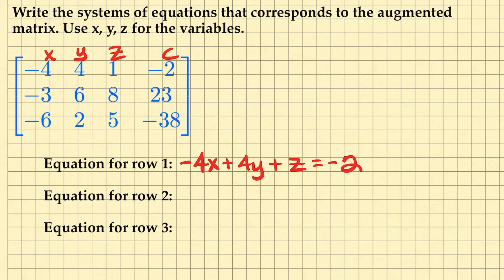For equation 2, I would have negative 3x plus 6y plus 8z equals 23.